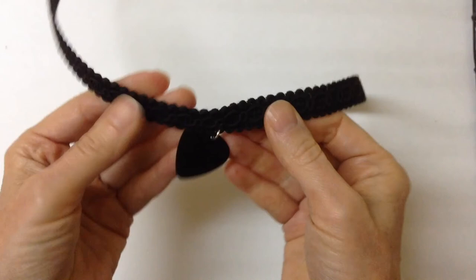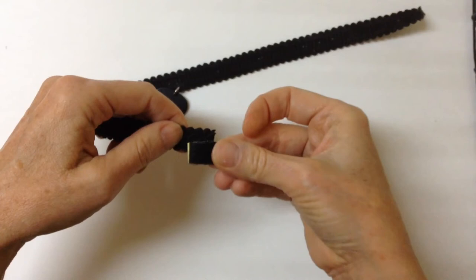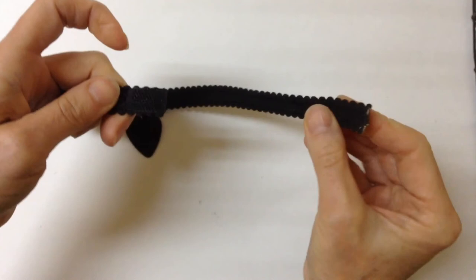Just for the sake of quickness, if you want to do a quick choker before you go out, I'm going to close it with Velcro. On this side I'll put the rough Velcro sticking up, away from the neck. We'll just pull off the adhesive backing and stick it on there like that.